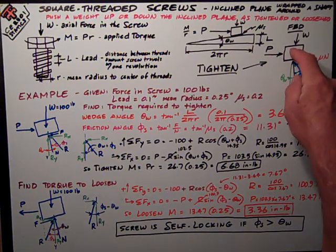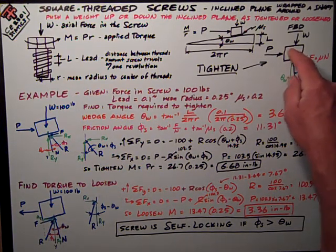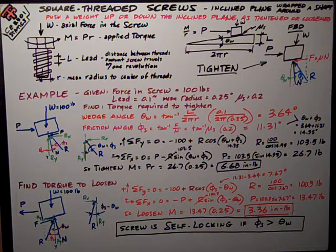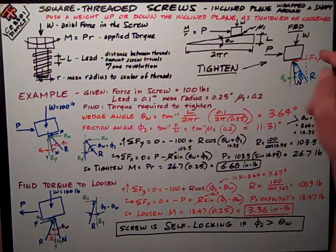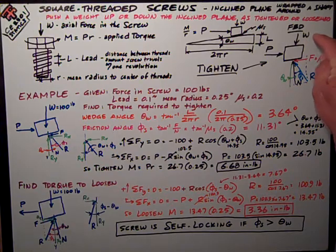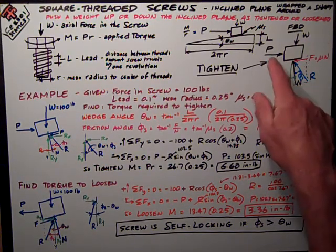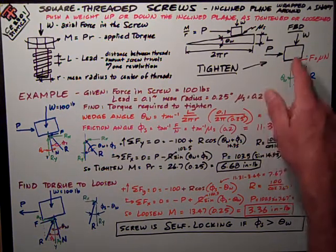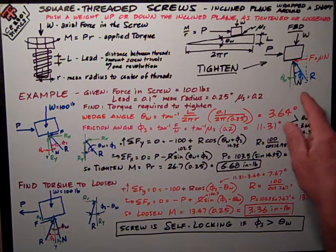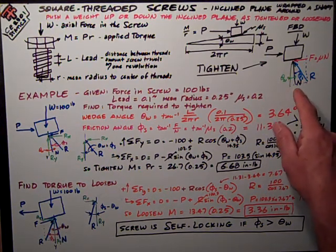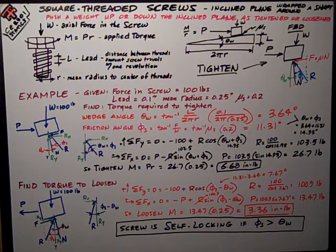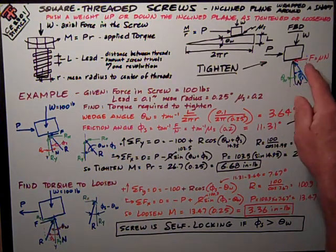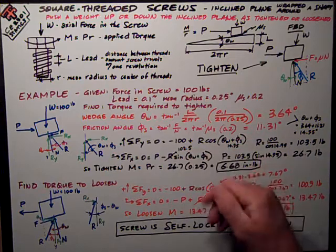Here's a free body diagram of tightening of the screw. Using that little block is what we're pushing up the hill, what we're screwing into really. We've got the axial force W, we've got the force P pushing it horizontally up the hill. And we've got the normal and friction forces acting on the sliding surface, the surface of the thread.